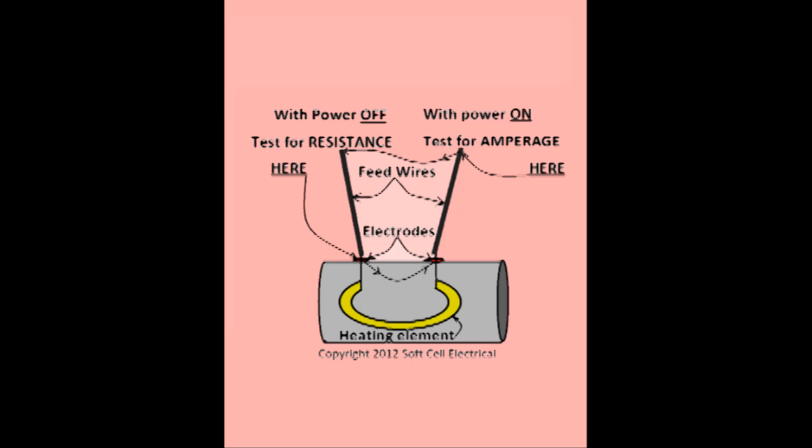Next, shut the power off. De-energize the unit and use your amp probe on the tips of the electrodes to test for resistance or ohms.